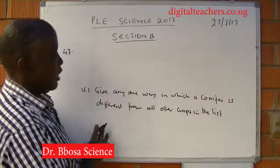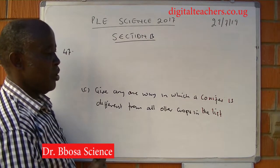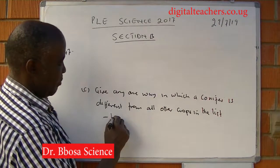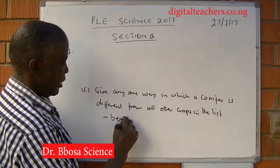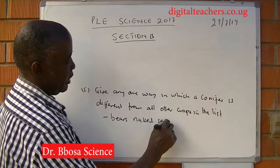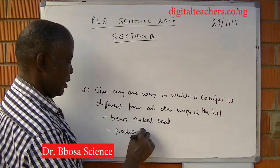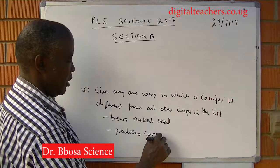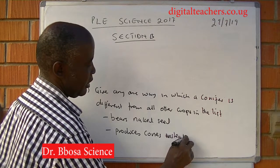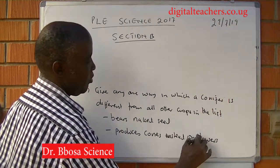Part C: give any one way in which conifer is different from all other crops in the list. It bears naked seeds. It produces cones instead of flowers.